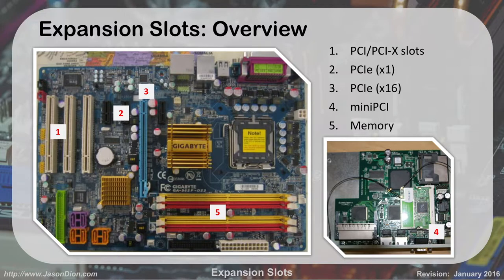Here's a couple of expansion slots — I'll give you a picture of them. Over here we have our standard PCI or PCI-X slots. These small black ones, number two, are PCI-E X1. Number three is a PCI-E X16. If we look over here on the right, I have a picture of a laptop and number four is a mini PCI slot, which is actually a networking card, a Wi-Fi card for that laptop.